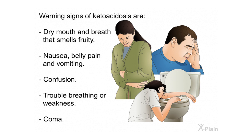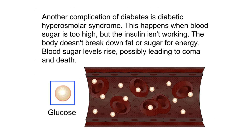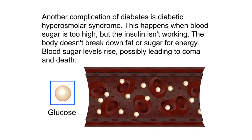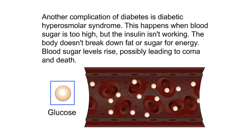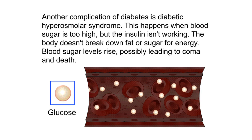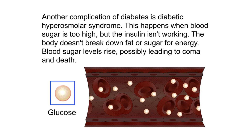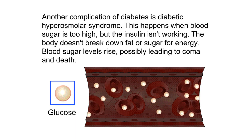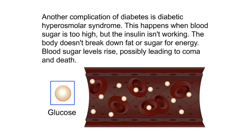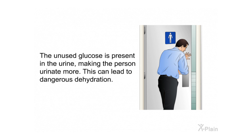Another complication of diabetes is diabetic hyperosmolar syndrome. This happens when blood sugar is too high but insulin isn't working. The body doesn't break down fat or sugar for energy, causing blood sugar levels to rise, possibly leading to coma and death. The unused glucose present in the urine makes the person urinate more, which can lead to dangerous dehydration.